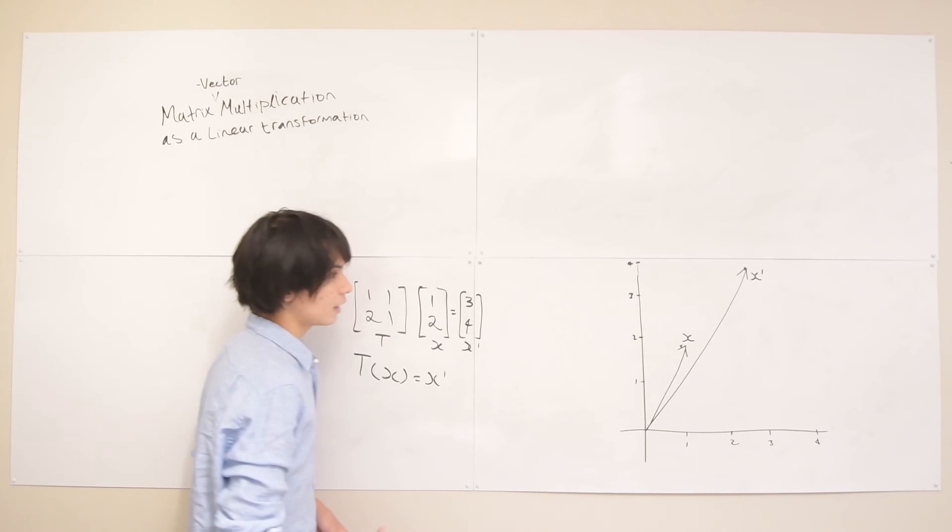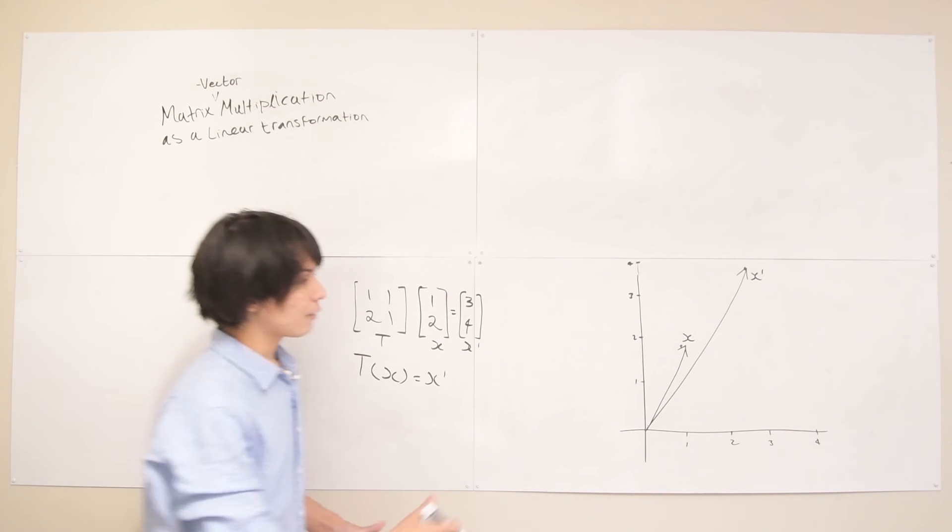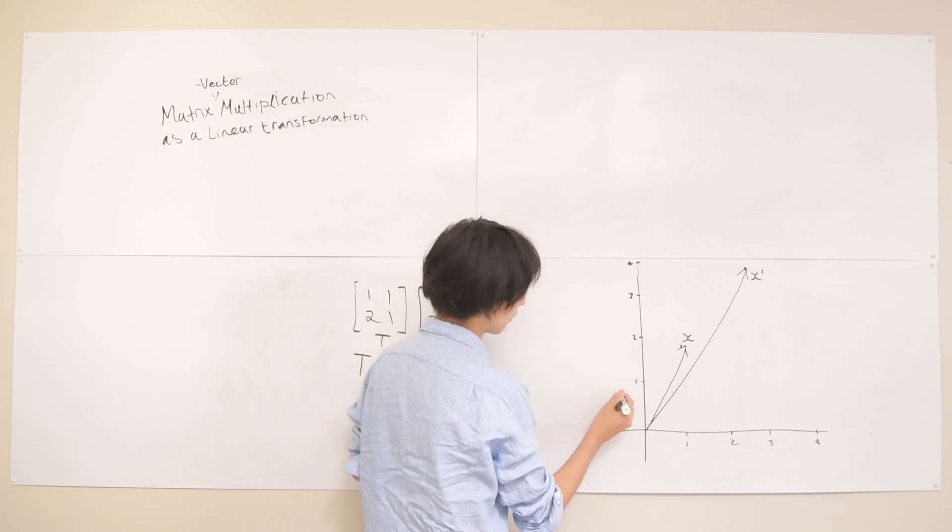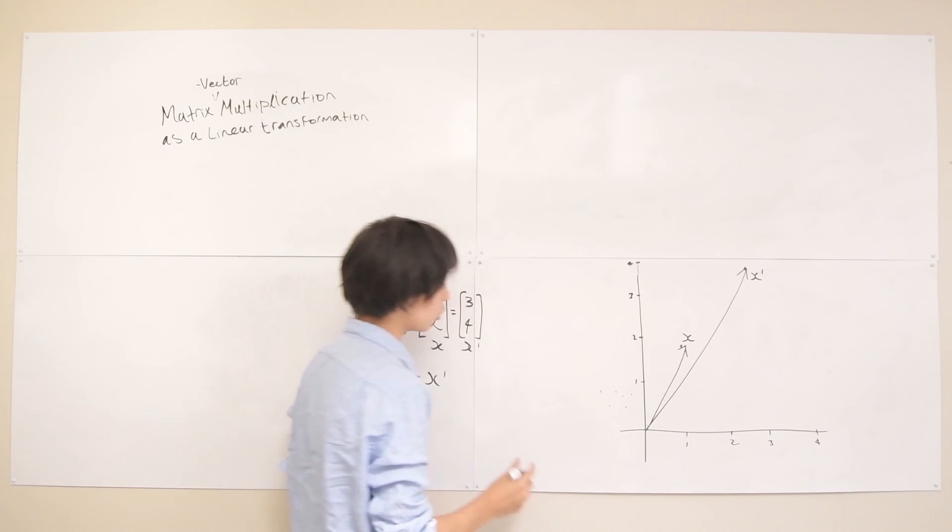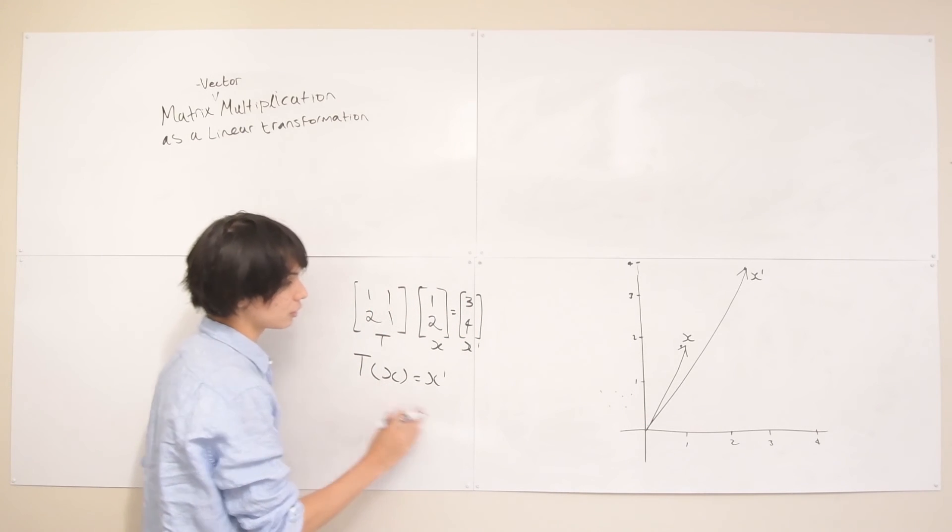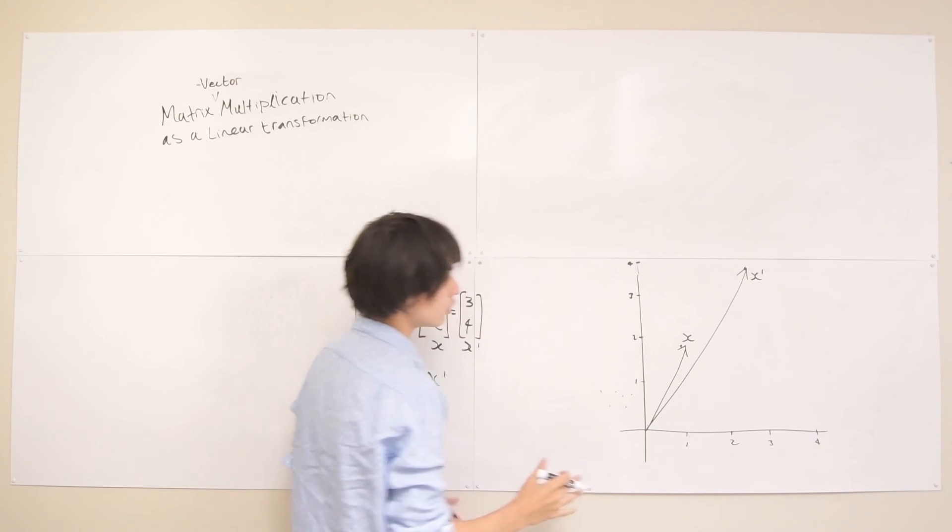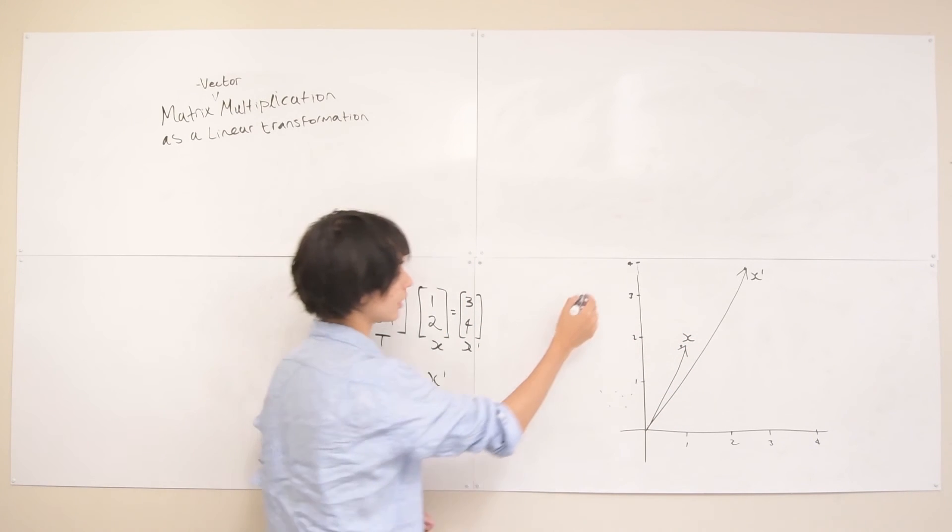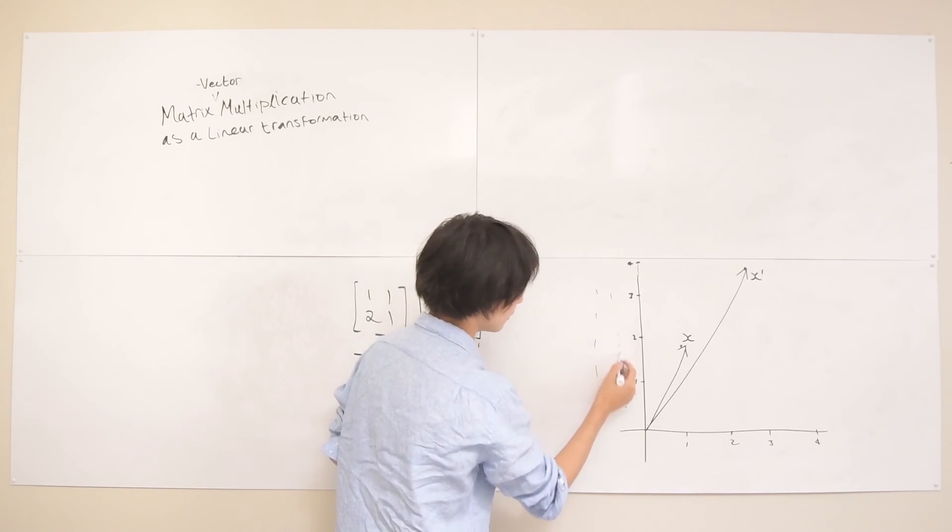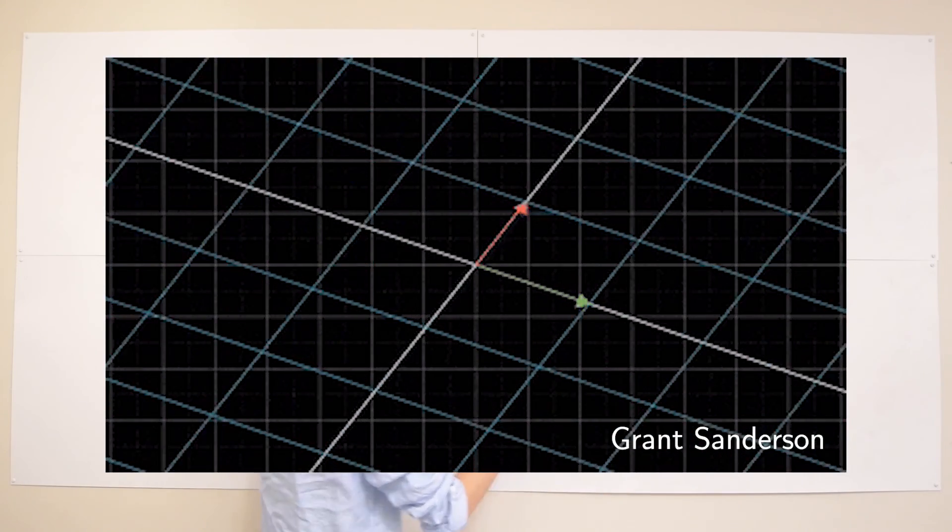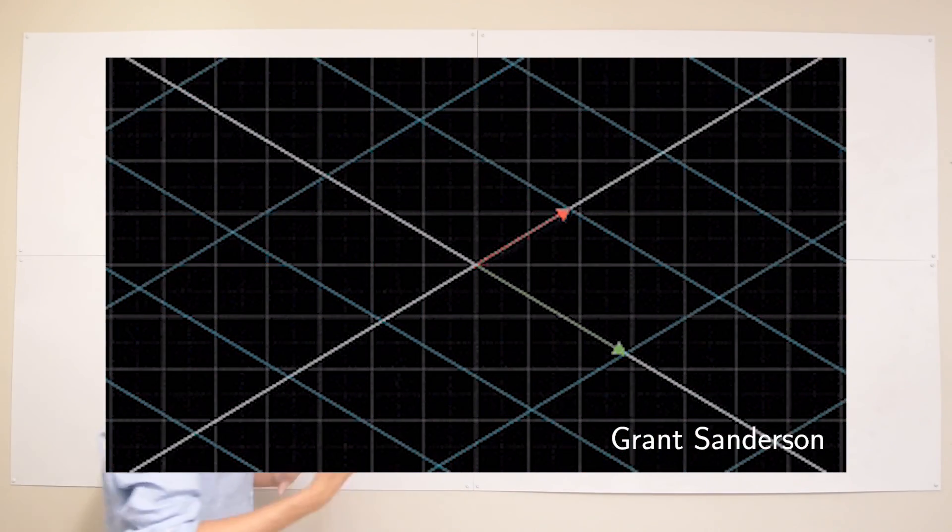You can almost imagine every single point in space, every single vector in space, going through this linear transformation and being shifted to some other place throughout the board. You can almost think of the grid lines in the Cartesian space actually moving because of the result of the transformation.